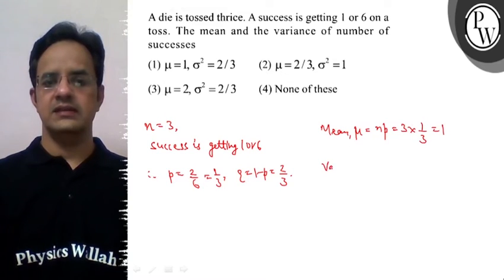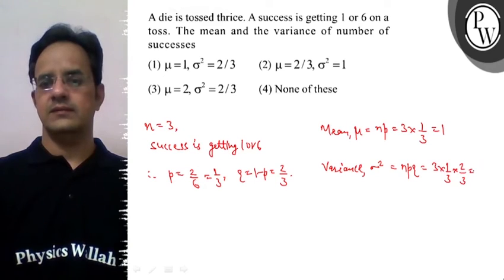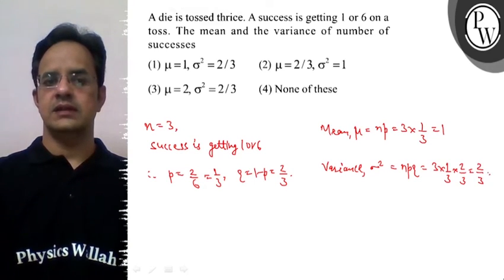The mean is equal to 1. Now the variance, written by σ², is equal to npq. n is 3, p is 1 by 3, and q is 2 by 3. So we get 2 by 3.